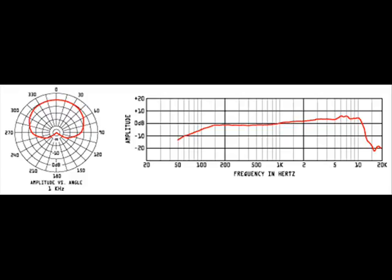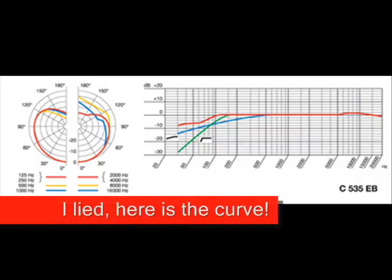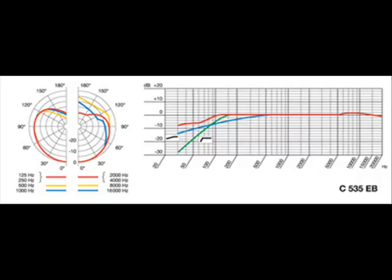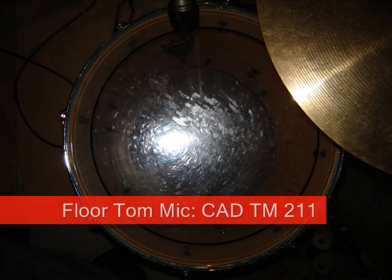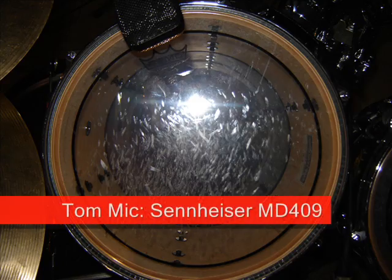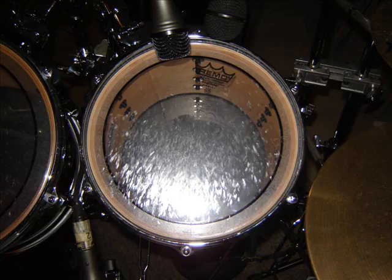I also compared the TM211 with an AKG C535 EB, which is a condenser microphone with a cardioid pattern — I used the flat response setting. All the microphones you're hearing are recorded flat EQ: straight from the mic, through a mic cord, into the A-to-D converter, right to the computer. Nothing is enhanced except maybe a slight gain boost to bring the level up. What you're hearing is a flat EQ response. The first sound file is the CAD TM211 and the second is the AKG C535.